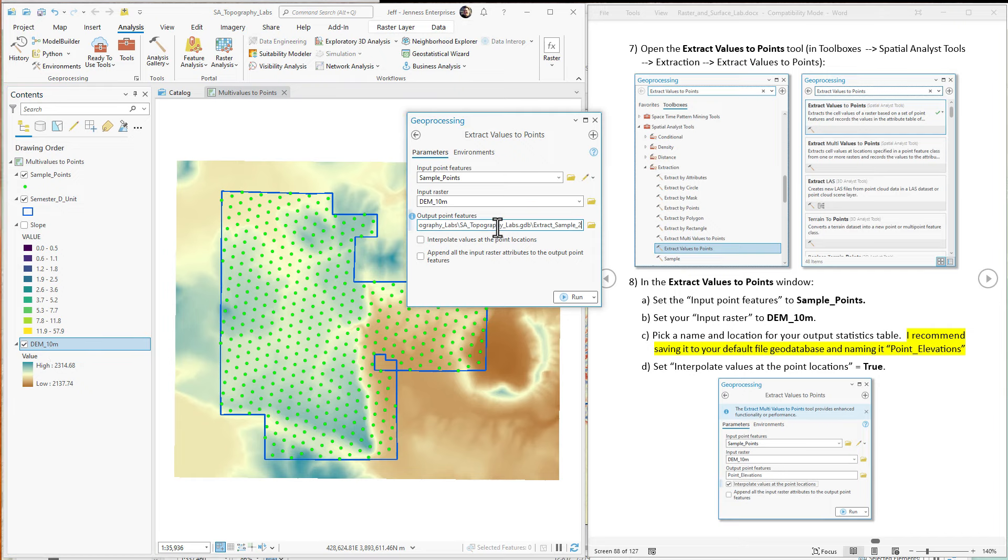Okay, we're going to name this point elevations. Okay, and we're going to interpolate values because that's more appropriate for elevation data and for slope data. This isn't a categorical raster.